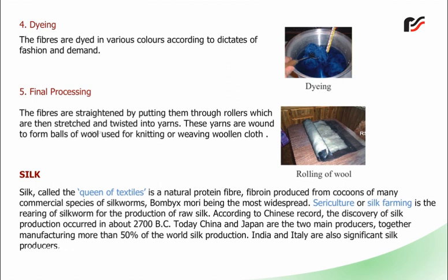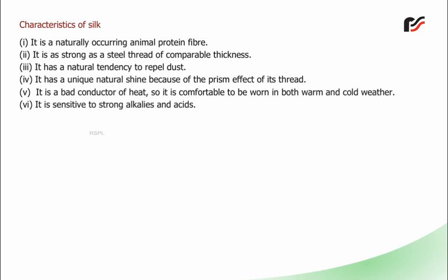Characteristics of silk: it is a naturally occurring animal protein fibre. It is as strong as a steel thread of comparable thickness. It has a natural tendency to repel dust. It has a unique natural shine because of the prism effect of its thread. It is a bad conductor of heat, so it is comfortable to be worn in both warm and cold weather. It is sensitive to strong alkalis and acids.